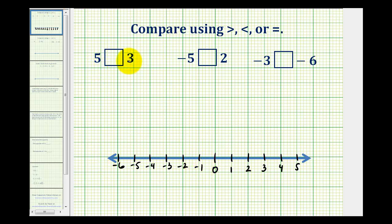To compare positive 5 and positive 3, we'll plot positive 5 in blue and positive 3 in green. Here's positive 5 on the number line, and here's positive 3 on the number line.